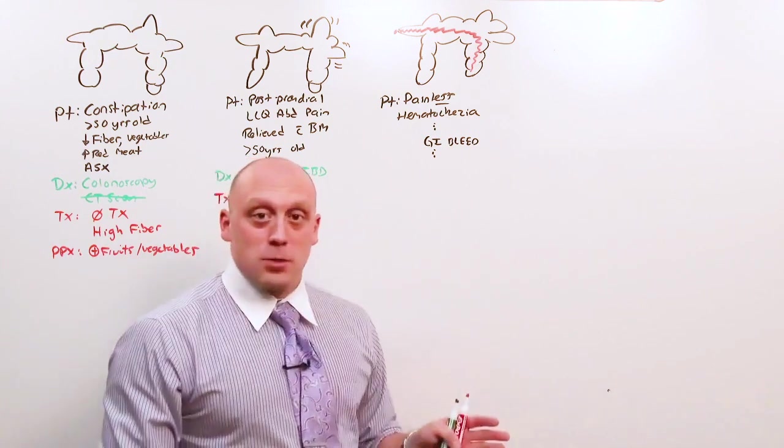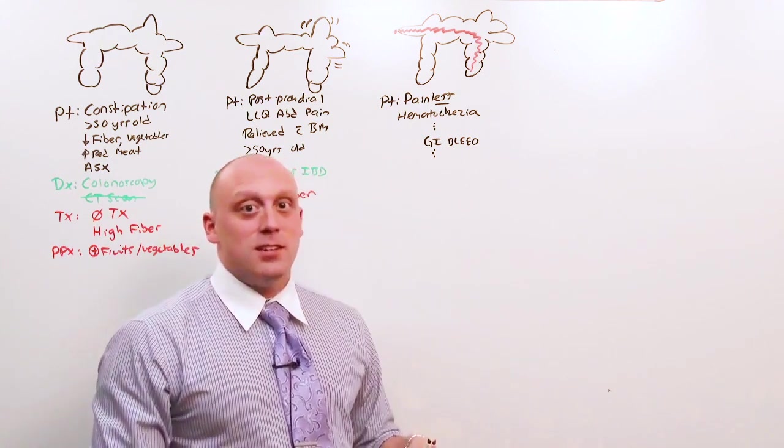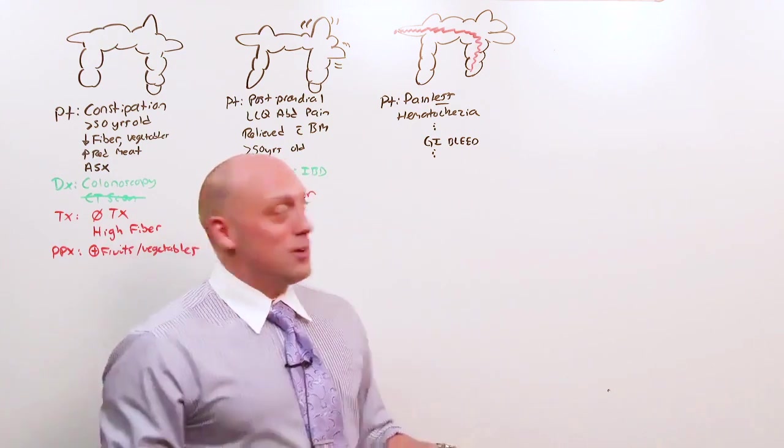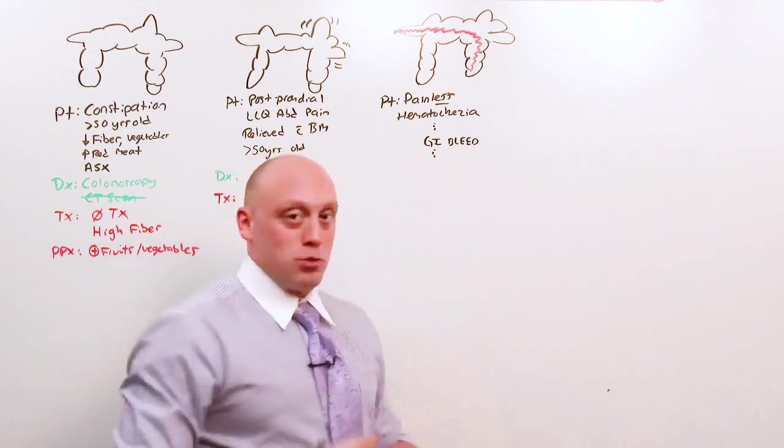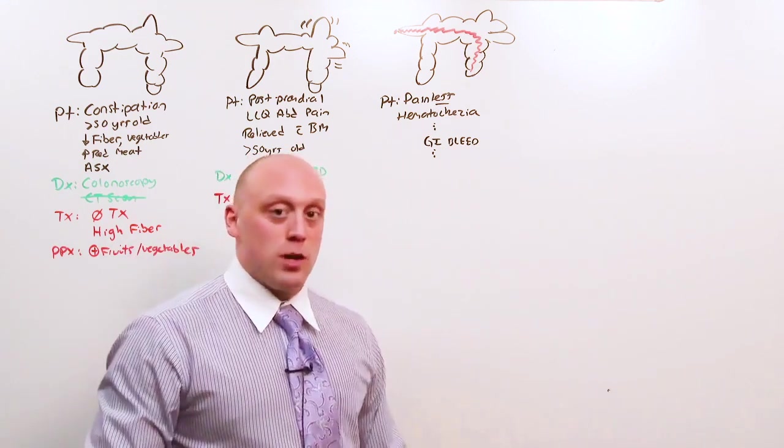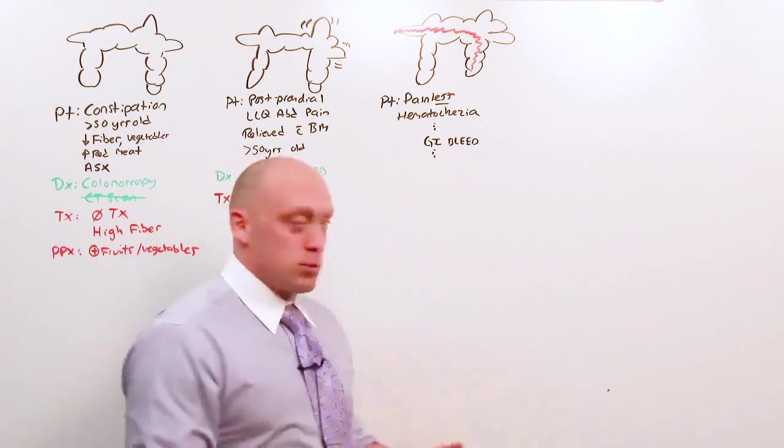They're probably going to get an endoscopy, an EGD, not what they need at all. But you're going to treat them like a GI bleed, rule out the GI bleed the way you normally do it, and then end up with, oh okay, so it's probably lower.